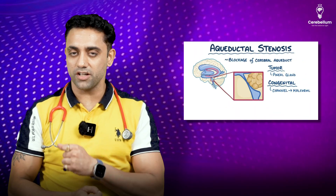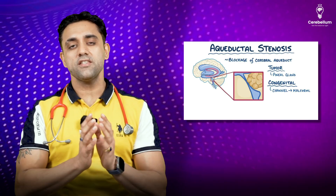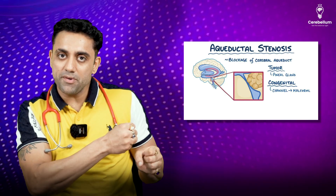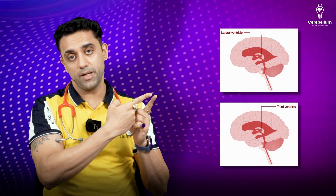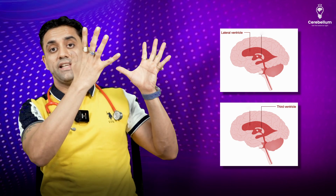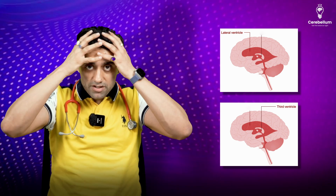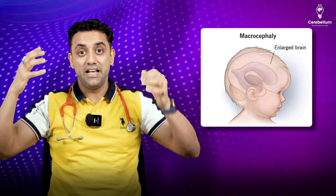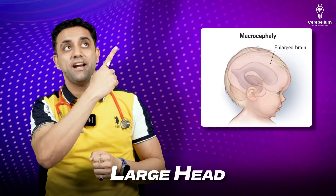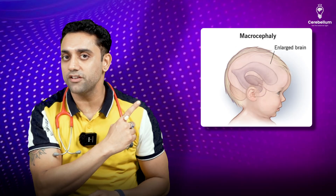Next question: what are the clinical features? Whenever there is aqueductal stenosis, the lateral ventricle and third ventricle, very importantly, they dilate, and the patient is going to have macrocephaly — a large head. Can you see the picture? There's macrocephaly.